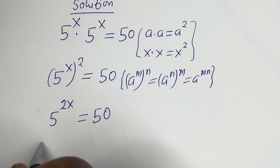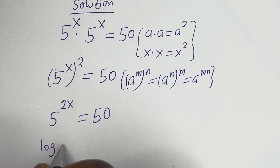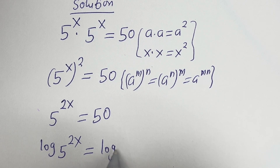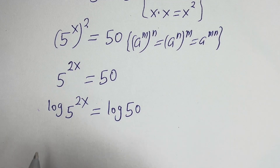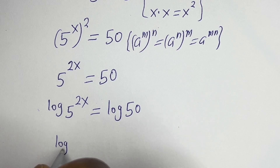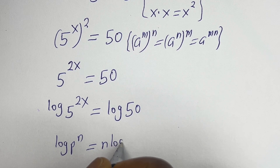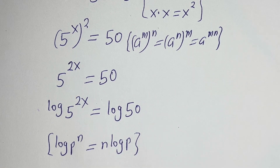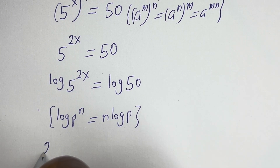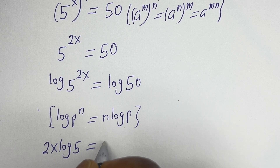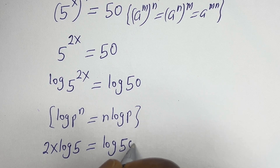Now let's take the log of both sides. We have log of 5 to the power of 2s is equal to log 50. Take note that if you have log p to the power of m, this is equal to m log p.